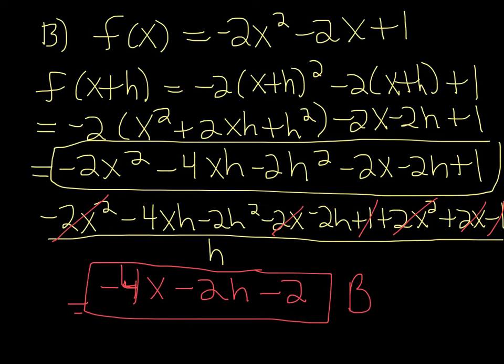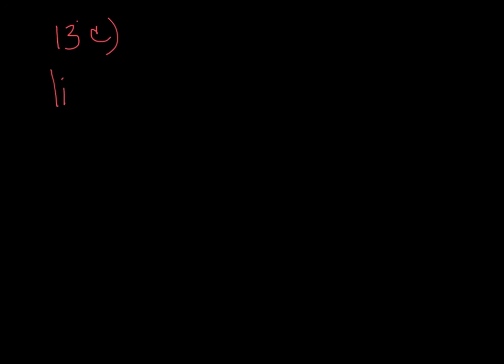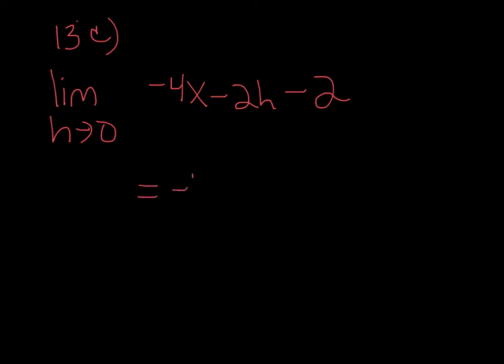Part C just asks you to find the limit of that as h approaches 0. So that is the limit as h approaches 0 of negative 4x minus 2h minus 2. If you put 0 in for h, what you get is negative 4x minus 2.